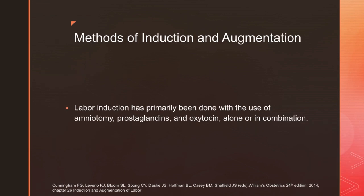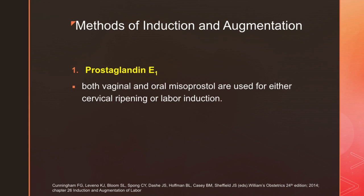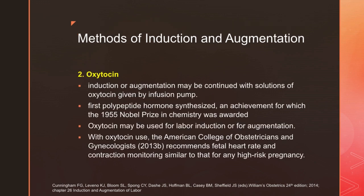Moving to the methods of induction and augmentation: labor induction has primarily been done with amniotomy, prostaglandins, and oxytocin alone or in combination. Prostaglandin E1 in the form of misoprostol, either oral or vaginal, can be used, though again this is illegal in our country. Oxytocin may be used as a method of induction and augmentation, administered by infusion pump. Incidentally, oxytocin is the first polypeptide hormone to be synthesized, an achievement for which the 1955 Nobel Prize in Chemistry was awarded.